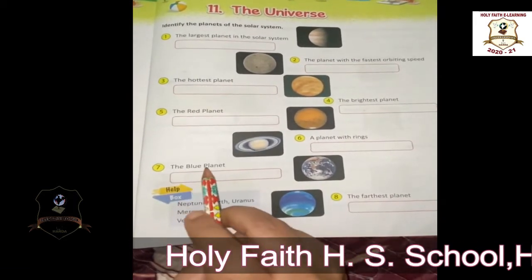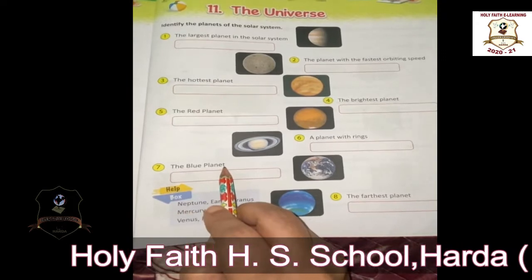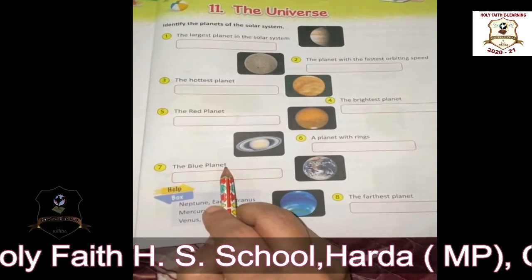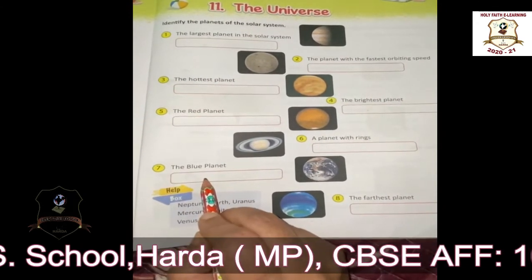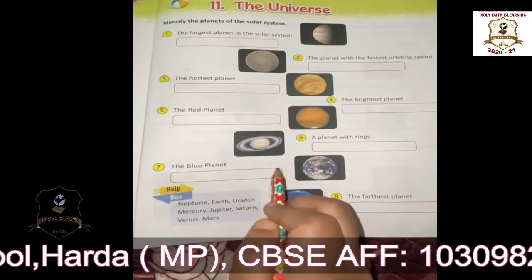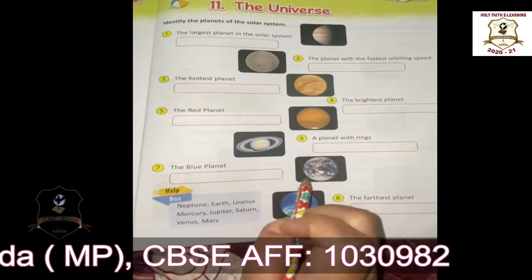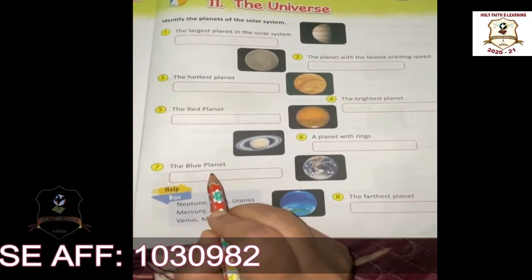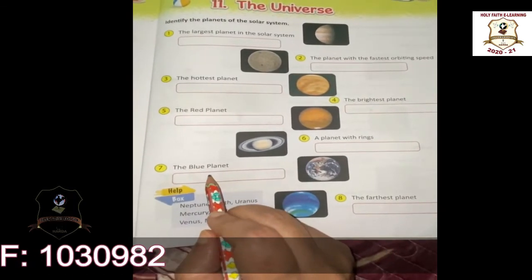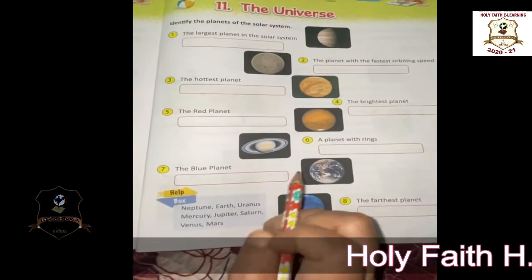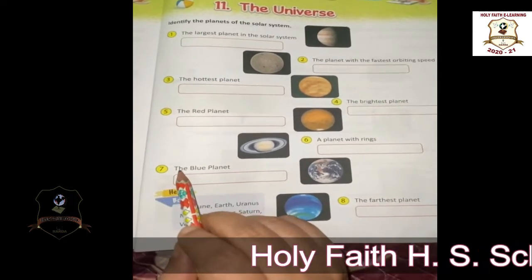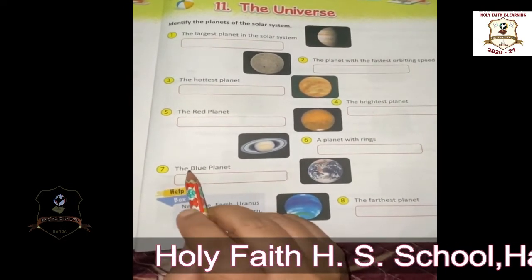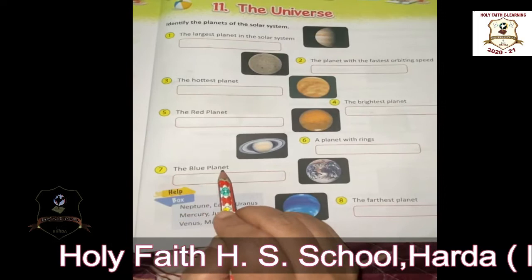Which is the blue planet? Earth is the blue planet. Why is Earth called the blue planet? Because most part of the Earth is covered with water. So Earth is called the blue planet.